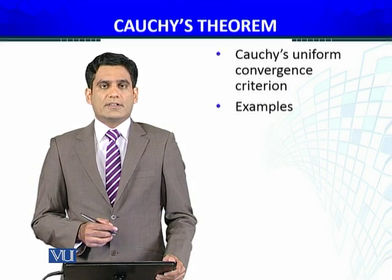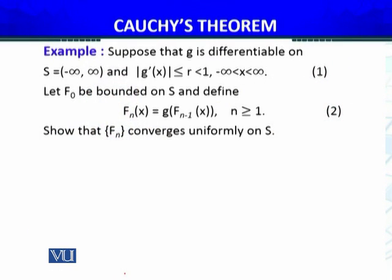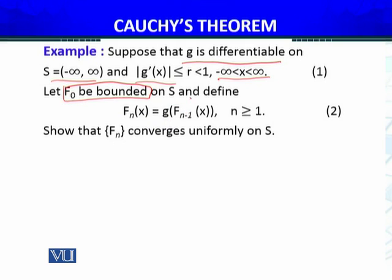We will apply the Cauchy convergence criterion for sequences of functions to a particular example. Suppose that G is differentiable — note all the given conditions carefully while solving this example — on S equals minus infinity to plus infinity. Furthermore, |G'(x)| ≤ R where R < 1, over the domain from minus infinity to positive infinity. Let f_0 be bounded on S, and define the sequence of functions recursively on S.